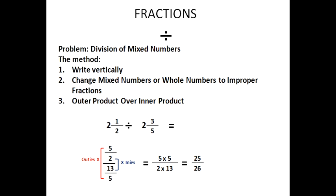Now we will divide mixed numbers. The method is simple: write the problem vertically, change mixed numbers or whole numbers to improper fractions, then proceed with outies over inies. So two and one-half divided by two and three-fifths: two and one-half is five over two, and two and three-fifths is thirteen over five. We form outies: five times five on top. We form inies: two times thirteen on the bottom. Nothing cancels, so our final answer is twenty-five over twenty-six.